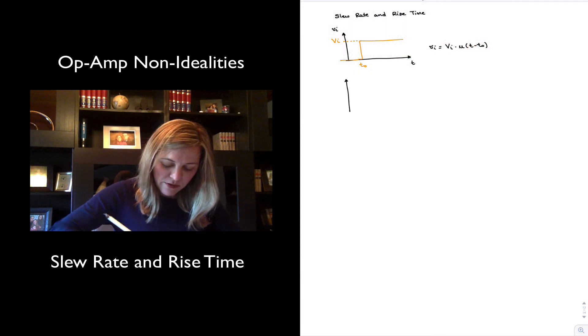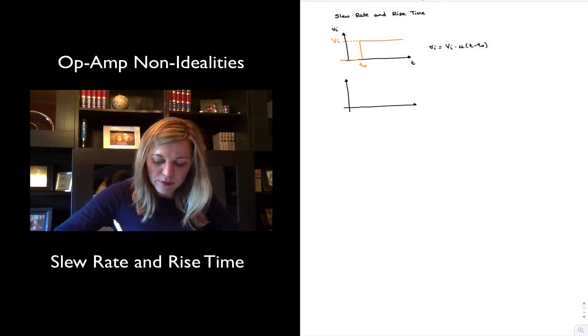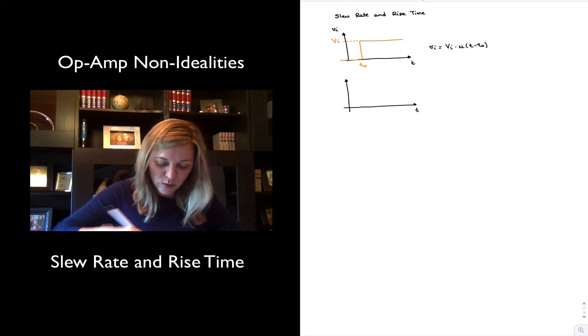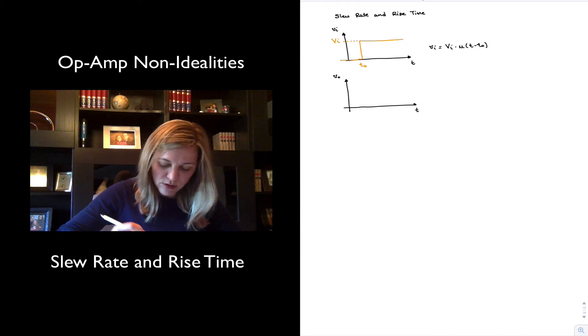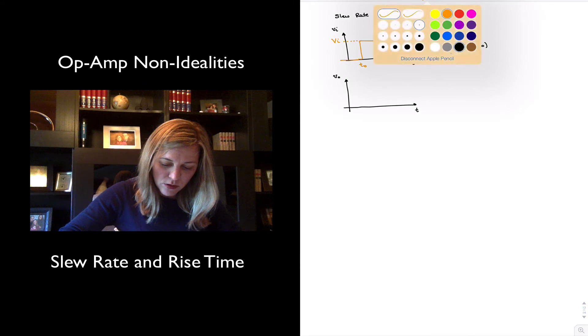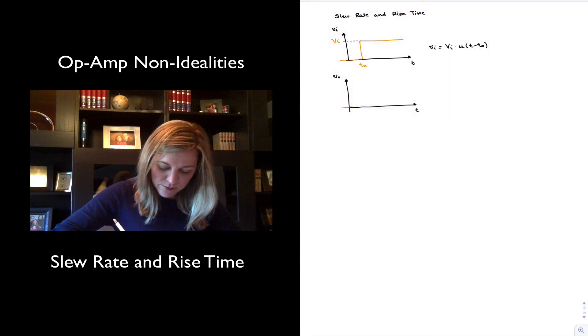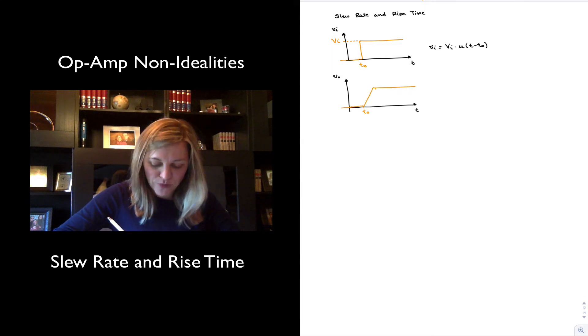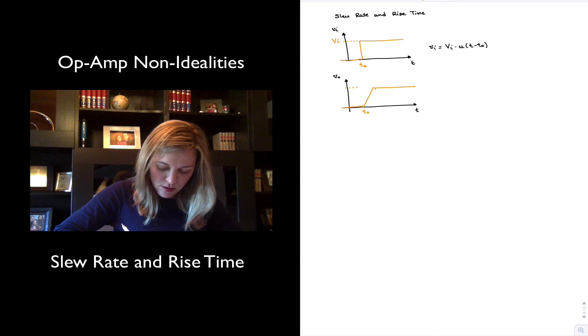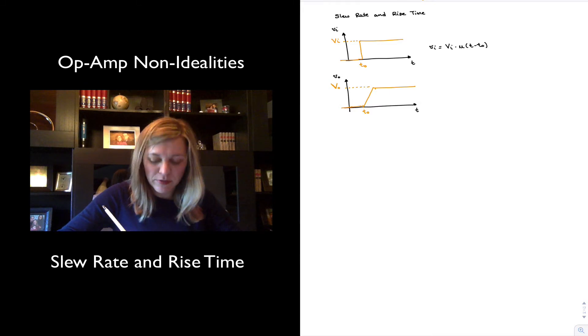If my op-amp is suffering exclusively from slew rate limitations, what I expect will happen is that my Vout as a function of time is going to look something like this. At time t0, it'll start changing and get to a final value.